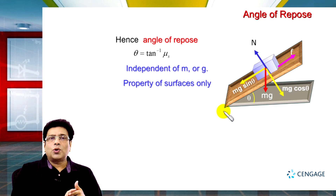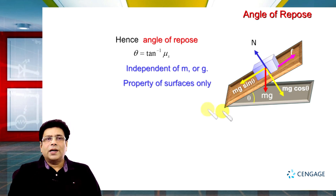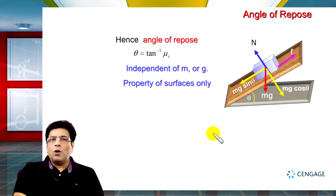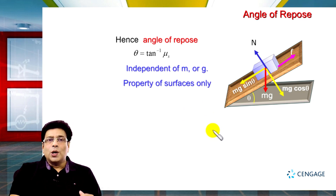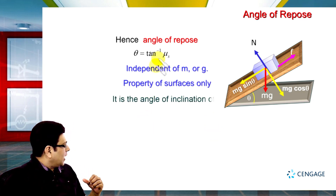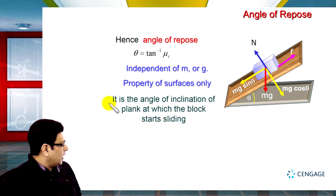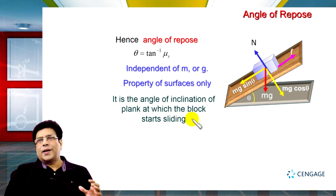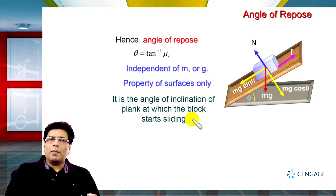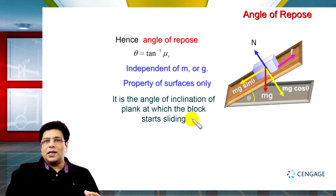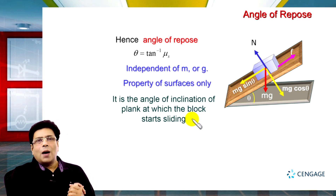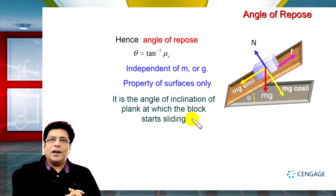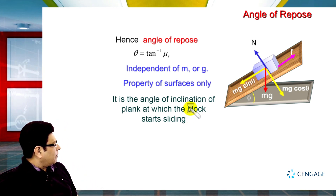This angle of repose is independent of the mass of the object and also of g. That means the angle of repose is a property of the surface only, since the friction coefficient μs is a property of the surface. It is the angle of inclination of the plank at which the block just starts sliding.